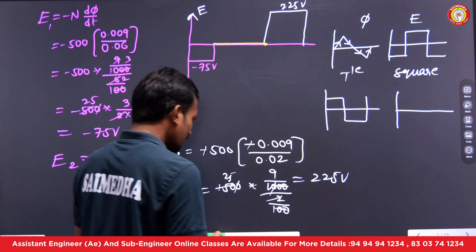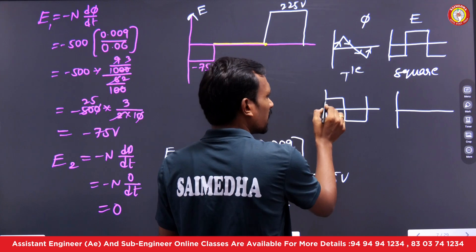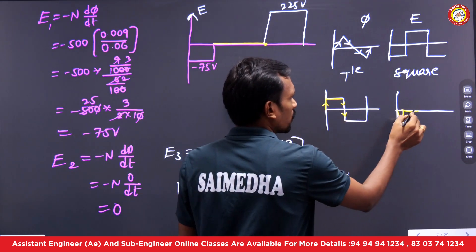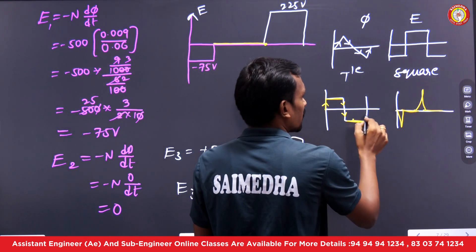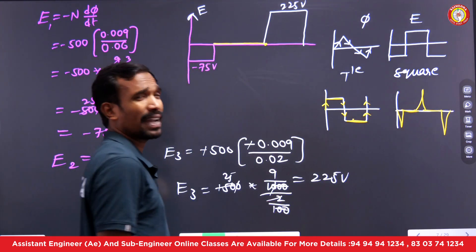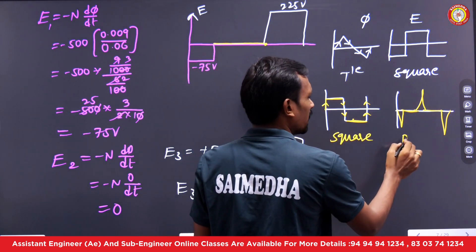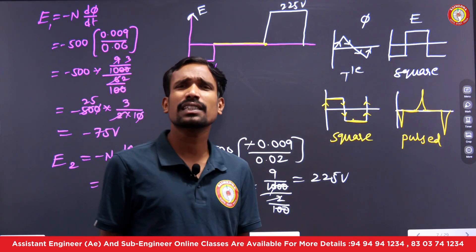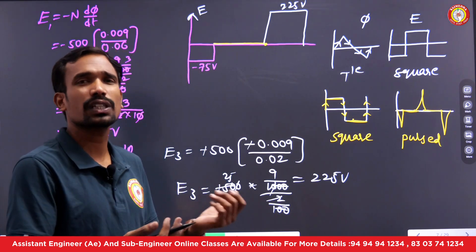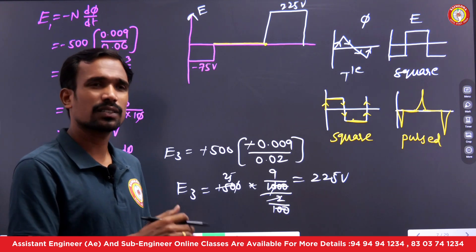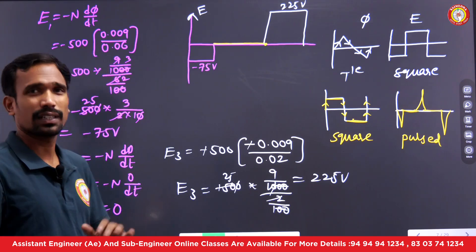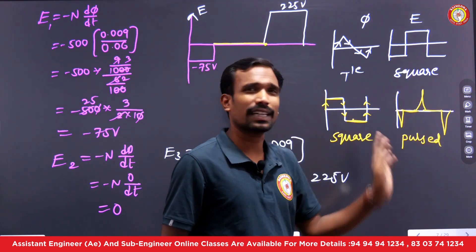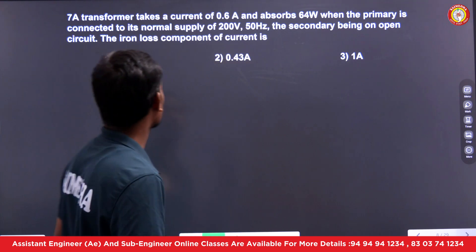If the flux waveform is a square, the EMF will appear as spikes or pulses — because the instantaneous changes in flux produce sudden large EMF values, and between those changes there is no EMF. If DC flux is given, there is no change in flux, so no EMF is induced in the transformer. These types of conceptual questions are important; they may ask concluded versions of them.